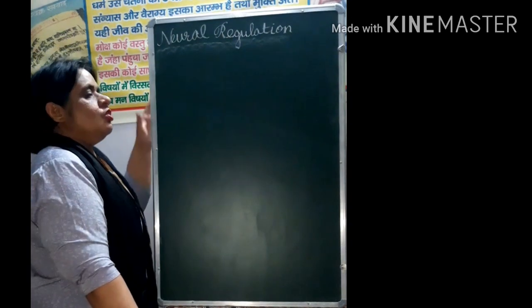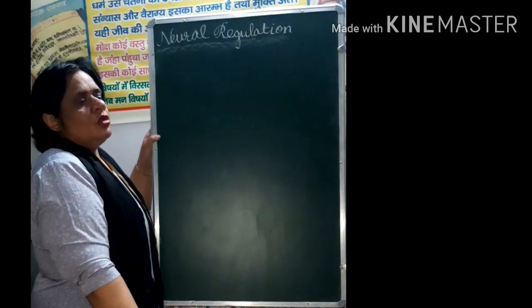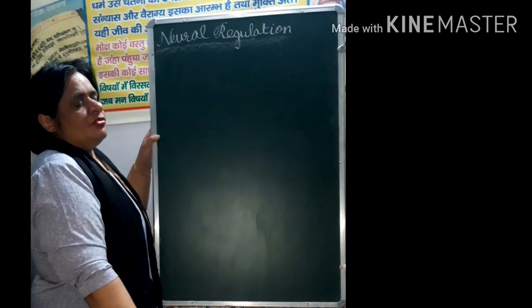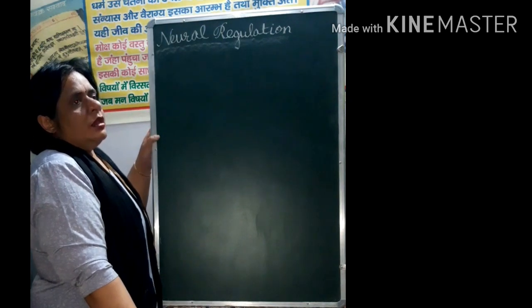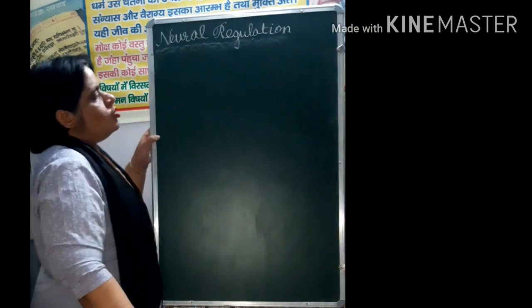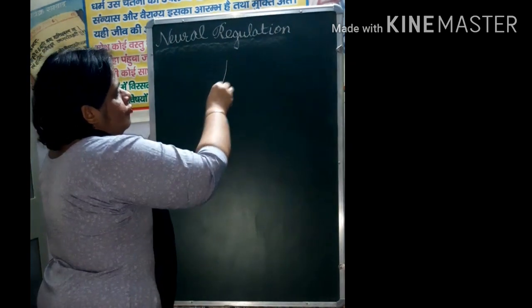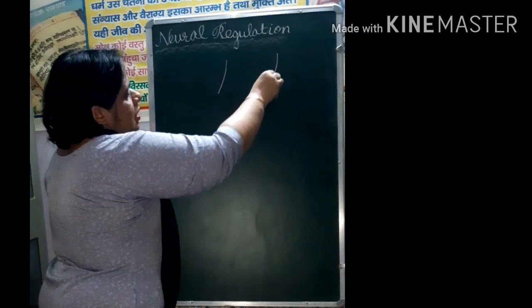Almost all the activities they are under the control of nervous system and you have studied about the brain. In this we talk about the two portion of brain that is of hind brain.